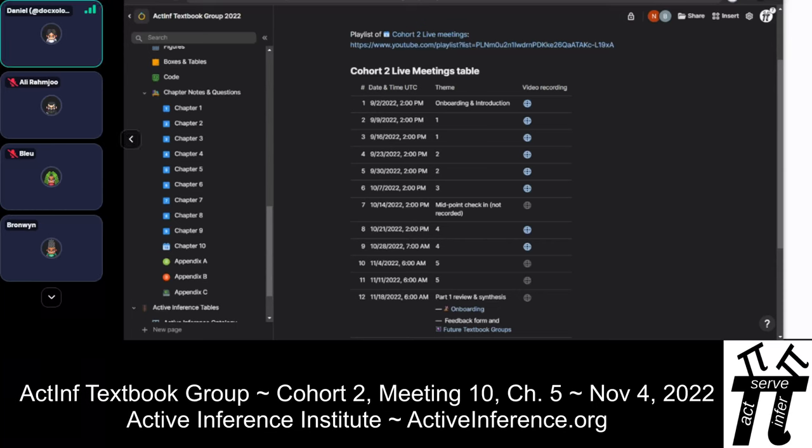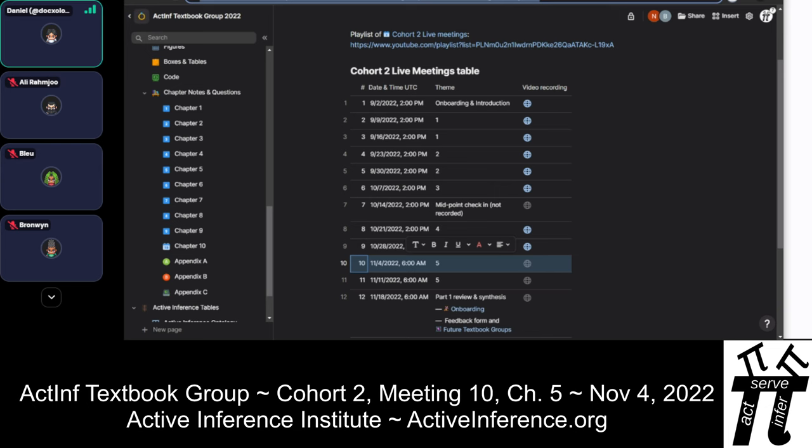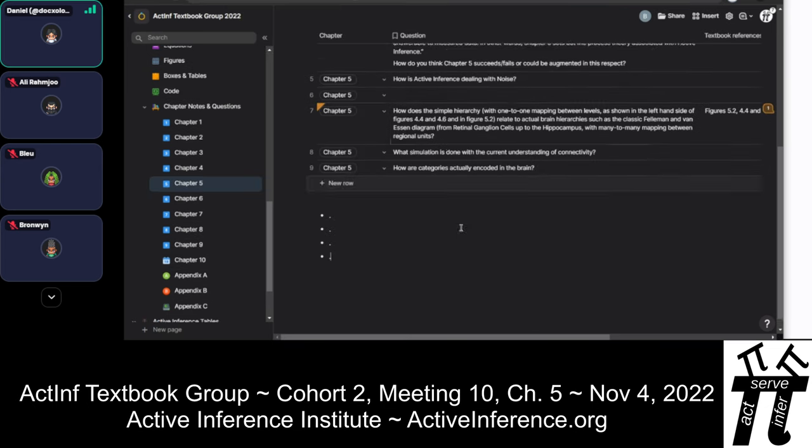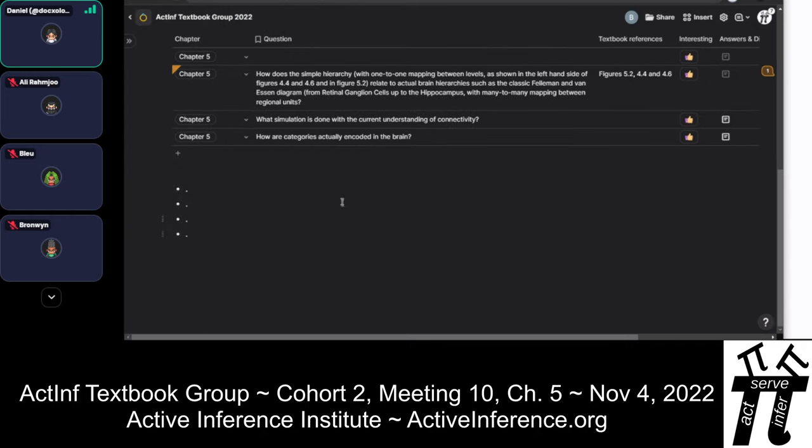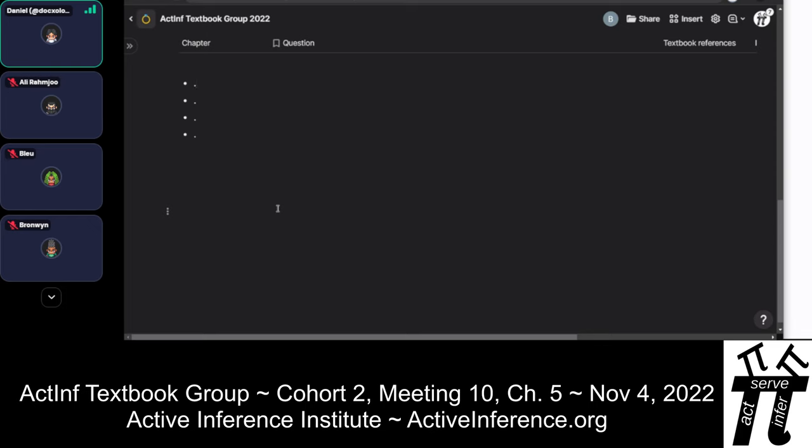Hello, this is Active Inference Textbook Group, Cohort 2. We're in Meeting 10 on November 4th, 2022, and we're having our first discussion on Chapter 5, Message Passing and Neurobiology. To begin, does anyone want to share any general thoughts or remarks on Chapter 5? Just any experiences they had reading it, any topics that they thought they want to discuss a little bit today, just anything about their reading of Chapter 5?